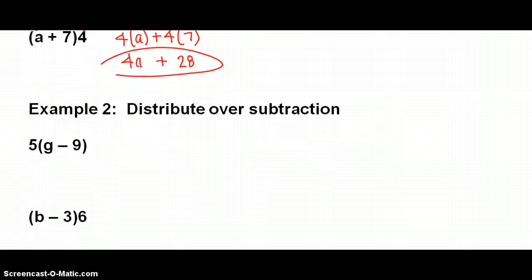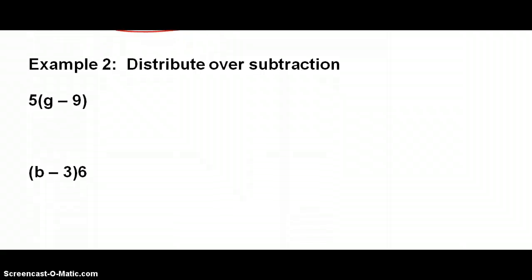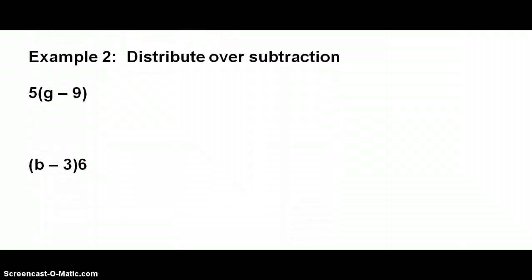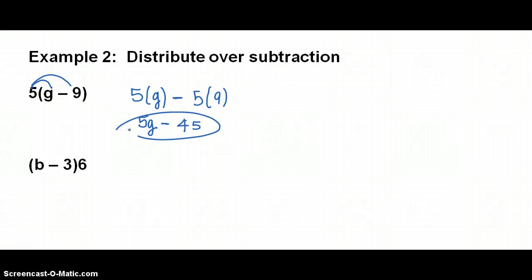Okay, what about distributing over a subtraction sign? Let's change colors. 5 gets multiplied times everything inside parentheses. 5 times G. And I like to just go ahead and put my sign, my negative, right there. And then it's 5 times 9. Exactly what I did with addition, except my sign here is negative. So, this becomes 5G minus, and 5 times 9 is 45. So, there's your final answer. 5G minus 45.